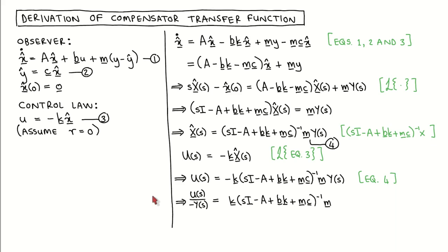The one part of the compensator — the observer — is described by two equations we looked at previously, which we call equation 1 and equation 2. We also assume that the initial estimated states is equal to zero. The other part of the compensator is the control law, given by equation 3. Here we assume that the reference input is zero, since we are only interested in the dynamics of the compensator between the plant output and the plant input.